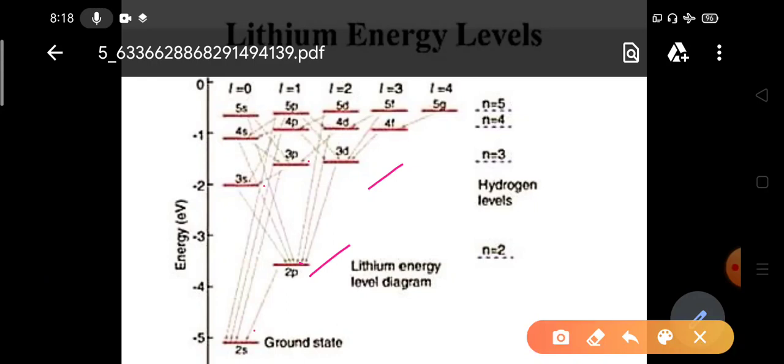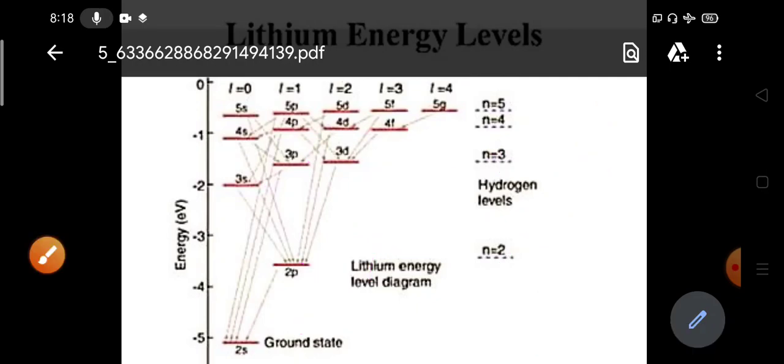3S to 2P is possible, 3P to 2S is also possible, 3D to 2P is possible. But there is no transition of 3D to 2S, these are not possible. Look here, only delta L equals to plus minus 1 rule is followed.